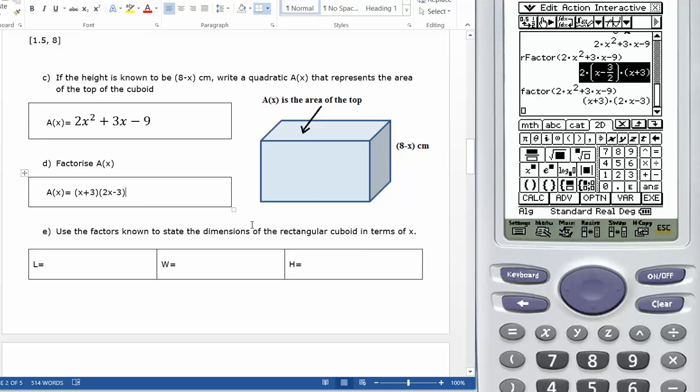Use the factors to state the dimensions. Well, I know that the height is 8 minus x. I could say the width is 2x minus 3. And that would make the length x plus 3. If you're going to use these factors, then you would say that the width was (2x minus 3) on 2 and the length was x plus 3. These could be interchanged.